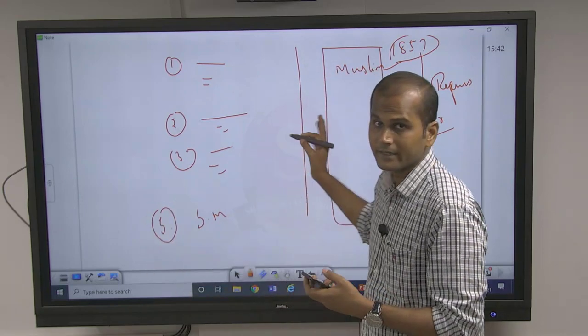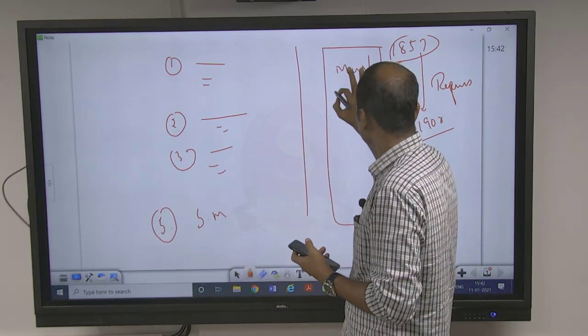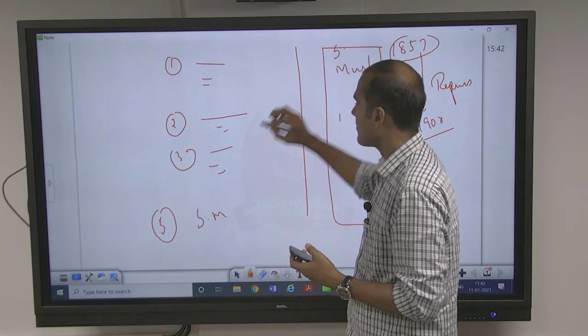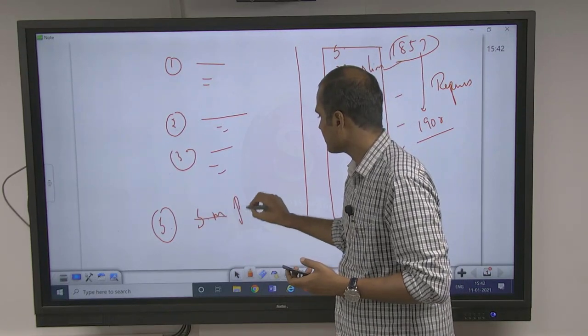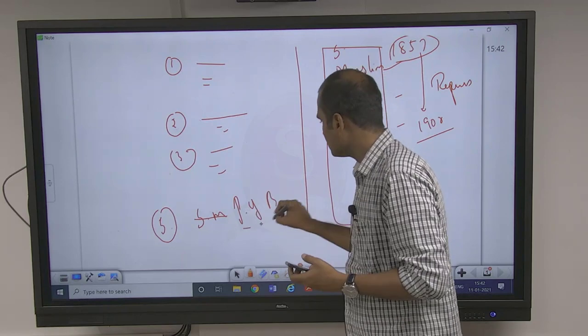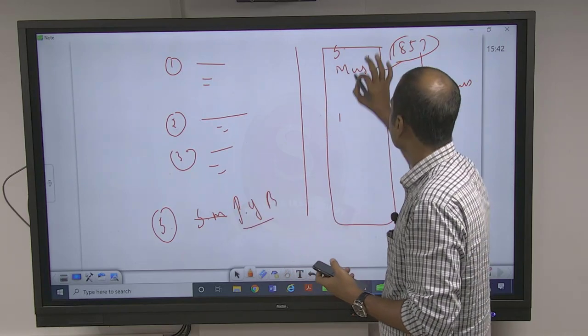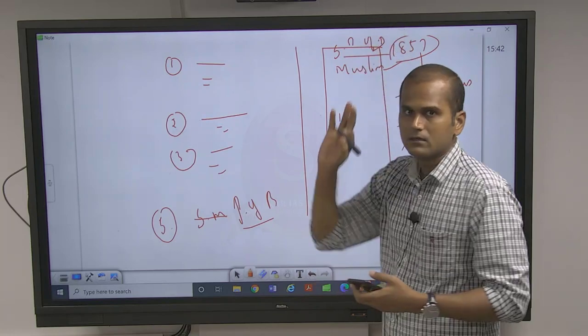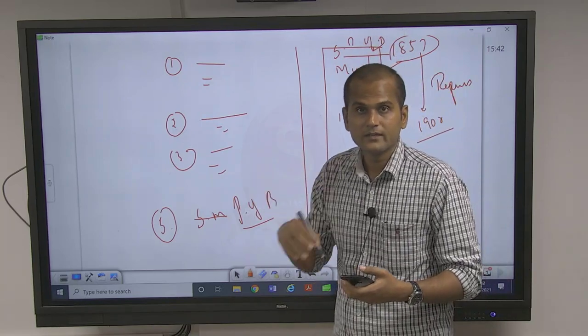Here you can write that the culmination is the Swadeshi movement - sorry, here is the partition of Bengal, which led to the Swadeshi movement. So here it is the partition of Bengal. This analysis you shall give in the second part.